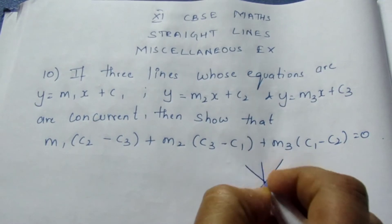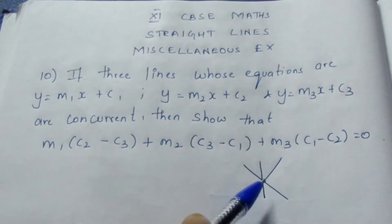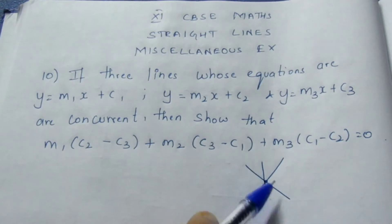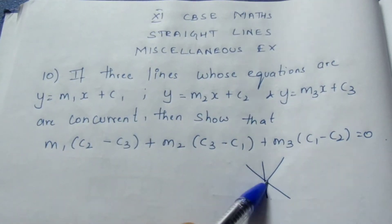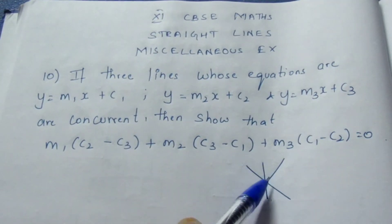Given that all the three lines lie on one point, there is one point of intersection between all the three lines. Concurrent means there is one point of intersection; they all meet once.